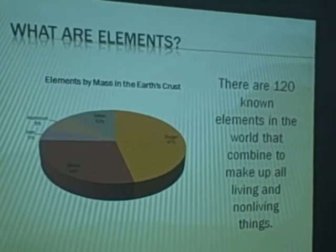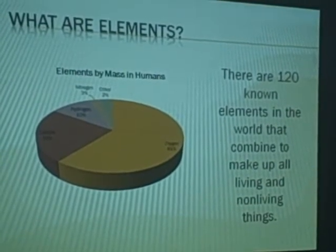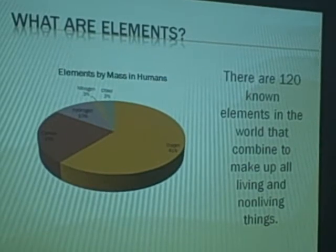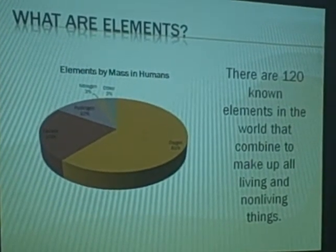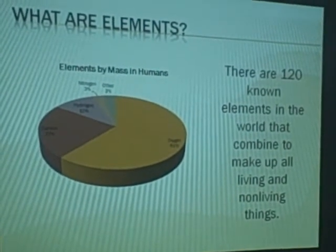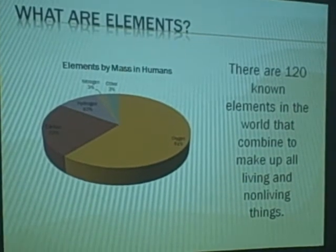Those are all non-living things. You also find elements in living things, such as humans. Humans are more than 61% oxygen, 23% carbon, 10% hydrogen, and 3% nitrogen. Then about 3% are other elements. But since we are matter, we are made of elements.